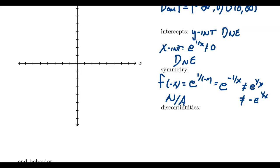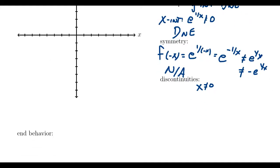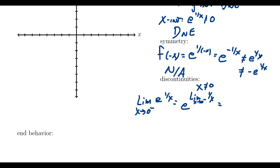What about discontinuities? This is connected to the domain issue — x cannot equal 0. We investigate the limit as x approaches 0. Because the natural exponential is a continuous function, we can bring the limit inside. As x approaches 0 from the left, 1 over x goes to negative infinity, so we get e to the negative infinity, which equals 0. But we see something very different with the right-handed limit.